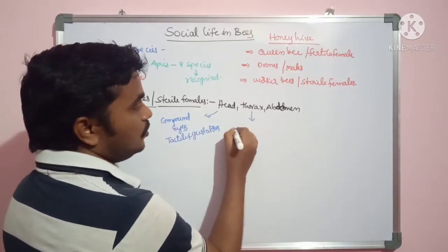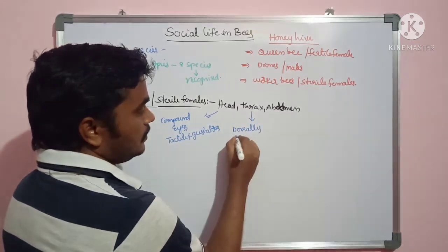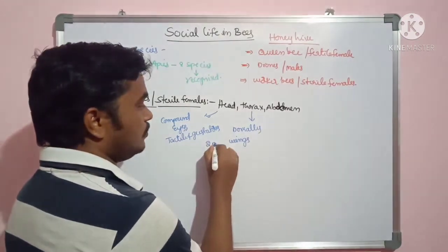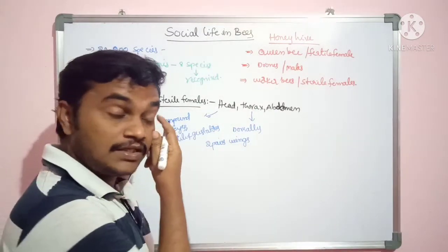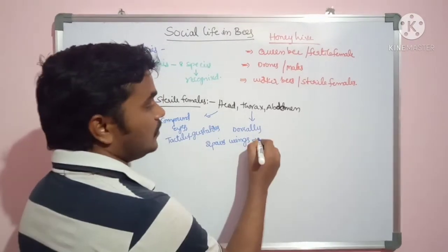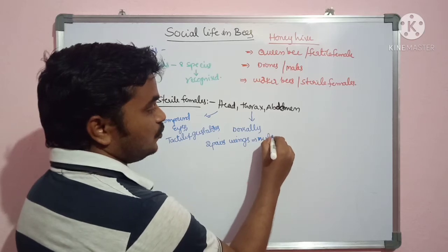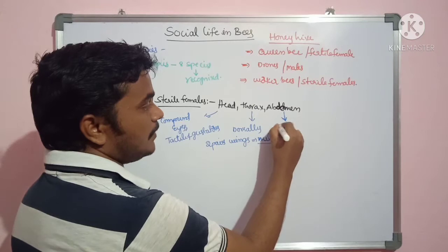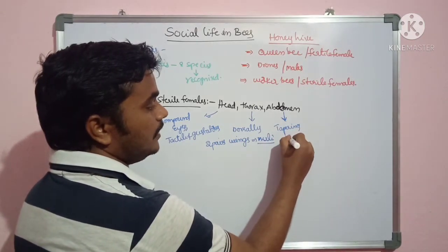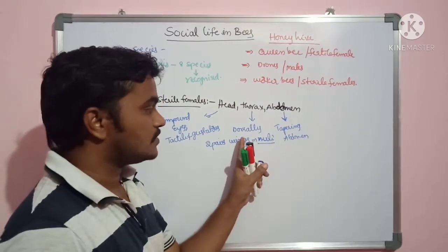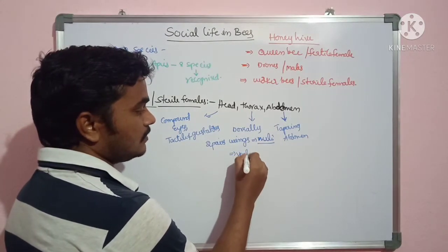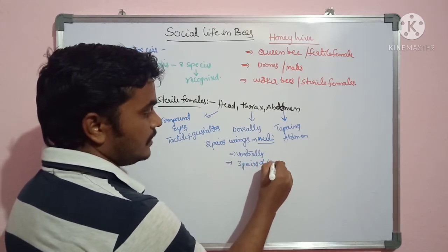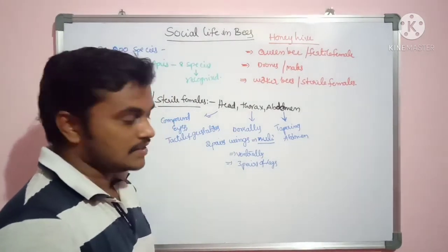In the thorax, there are two pairs of wings present dorsally. These wings are hinged. The abdomen is tapering. Ventrally, there are three pairs of legs present. So dorsally there are wings and ventrally there are three pairs of legs.